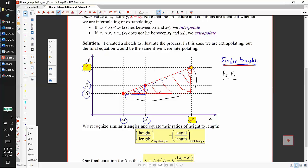...is equal to this length, f2 minus f1, divided by this length, which is x2 minus x1. Do a little bit of algebra with that to solve for the unknown, the unknown here being f3.